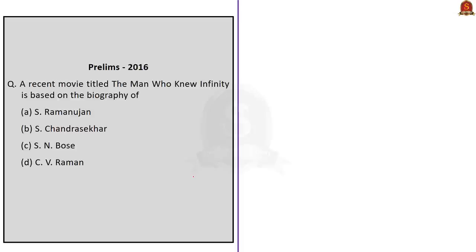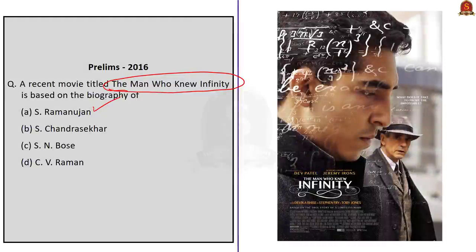There is a reason I've chosen this next question — many aspirants believe UPSC won't ask general knowledge type questions. The year 2016 was an exception; a question was asked from the entertainment part of the news. The question: A recent movie titled 'The Man Who Knew Infinity' is based on the biography of whom? Options: Ramanujan, Chandrasekhar, S.N. Bose, or C.V. Raman. The answer is option A — S. Ramanujan.